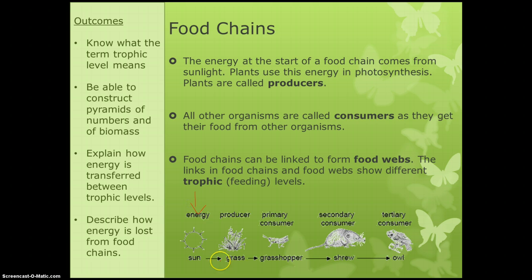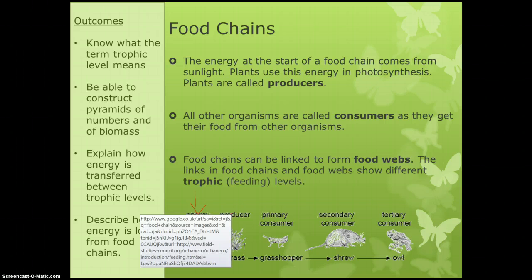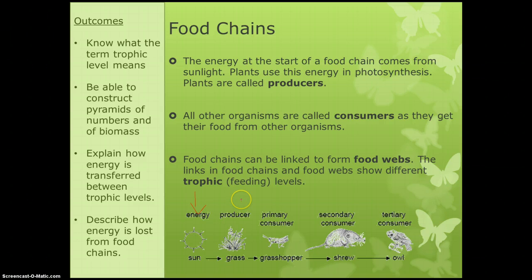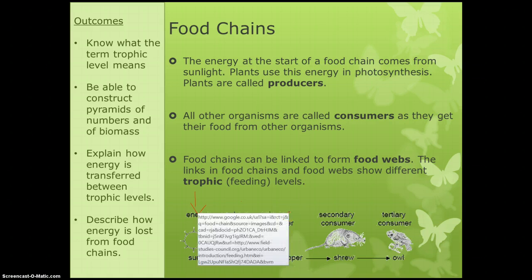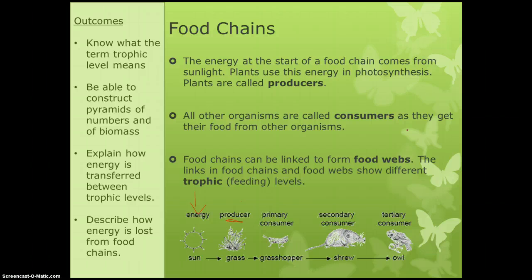Our next step in our food chain is our producers. Our producers are going to be plants because they use the energy from the sun in photosynthesis to make sugars. So next up we have our producers. Our producers then get eaten — consumed — by our consumers. So we've got our primary consumer; our grasshopper is eating our grass. Then our shrew eats our grasshopper, and then our owl eats our shrew. So that's how the energy travels along.